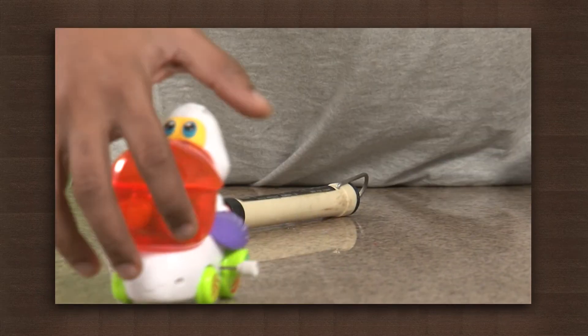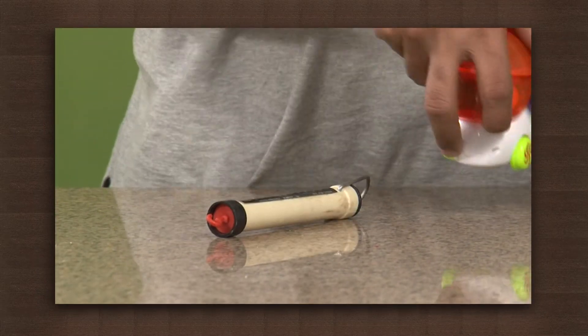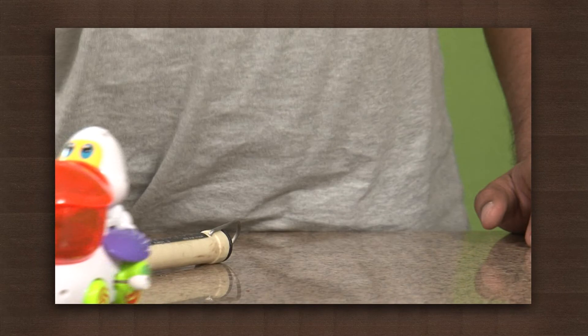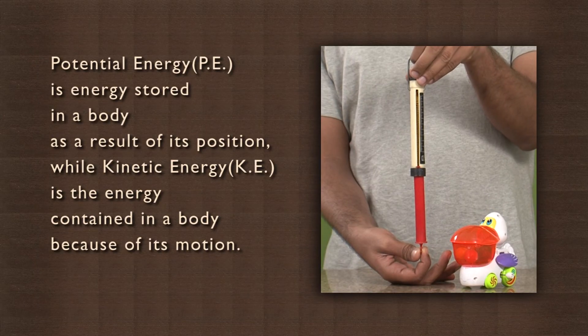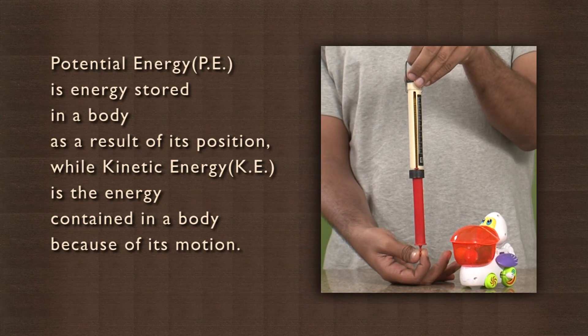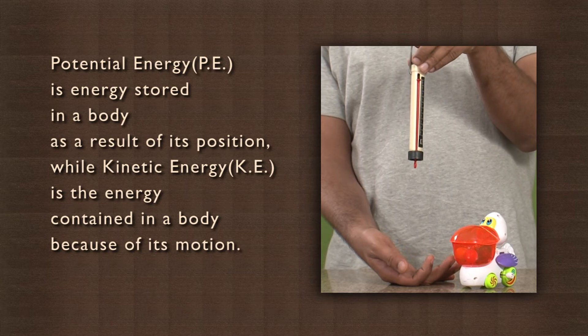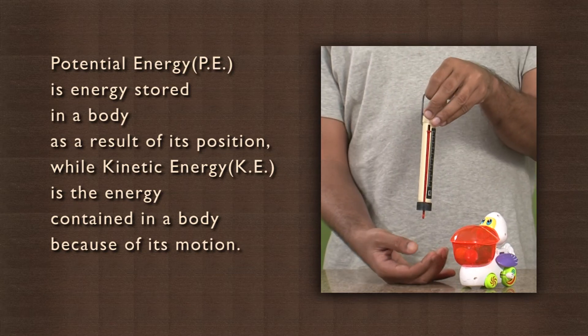The energy contained in the moving duck is called kinetic energy. Potential energy is energy stored in a body as a result of its position, while kinetic energy is the energy contained in a body because of its motion. So in the case of the arrow, the energy in the stretched string is potential energy and the energy in the moving arrow is its kinetic energy.